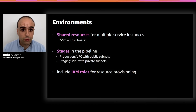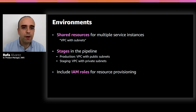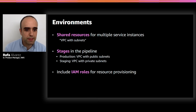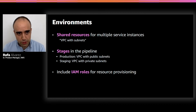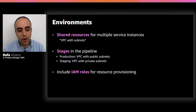The final step for administrators is to create environments. Environments represent shared resources for several service instances, like a VPC with subnets, and typically represent the stages in your pipeline — a VPC with public subnets for production, a VPC with private subnets for staging. When you create a Proton environment, you also provide an IAM role that Proton will use to provision those resources, which allows you to keep very clear what type of resources are available in each type of environment.